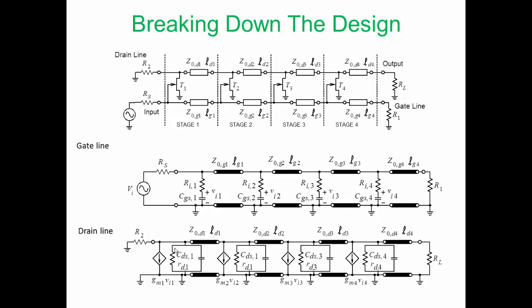And the strategy is, or one of the possible strategies is, to just consider the gate line on its own. That reduces the number of parameters, but we still have to do some simplifying work to be able to even design that. And then we can consider the drain line.